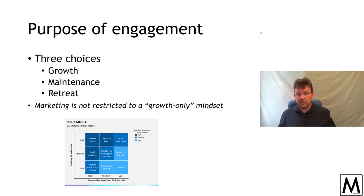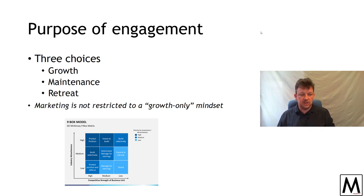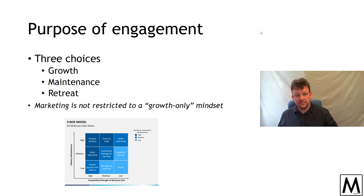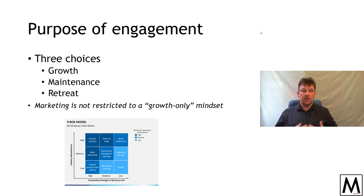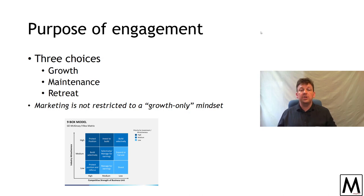Marketing is not restricted to a growth-only mindset. There are always strategically three choices: you can grow a market, maintain a market, or retreat from that market. The GE McKinsey matrix — a nine-box matrix — talks about the attractiveness of a sector and the relative strength you have in that sector, giving you those three choices with more nuance. The key point is that marketing can maintain market share, reduce market share, or even lower consumption. There are more choices than just growth only.